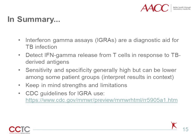In summary, interferon gamma release assays, or IGRAs, are a diagnostic aid for TB infection. They work by detecting interferon gamma release from T cells in response to TB-derived antigens. Sensitivity and specificity are generally high but can be lower among some patient groups, so it is important to interpret results in their clinical context and to keep in mind the assay strengths and limitations. You can always refer to CDC's helpful guidelines for IGRA use, with a link provided.